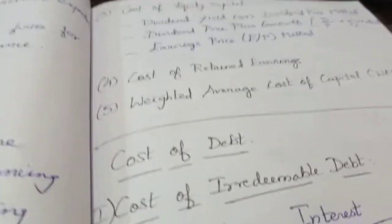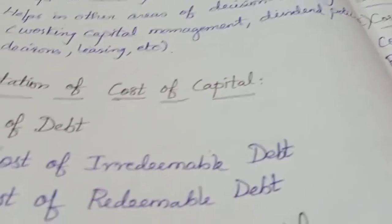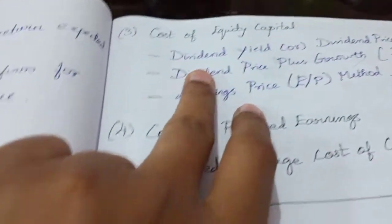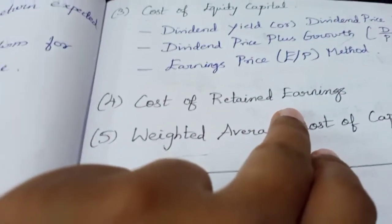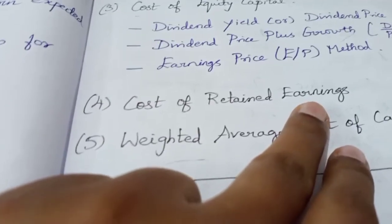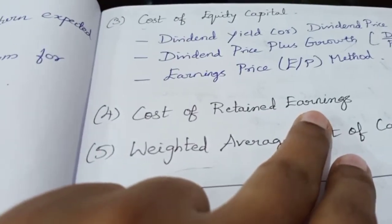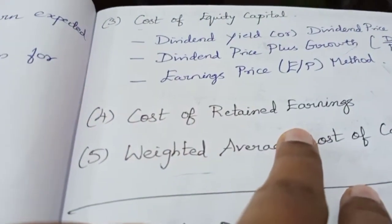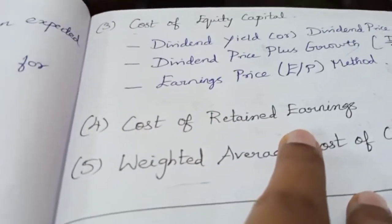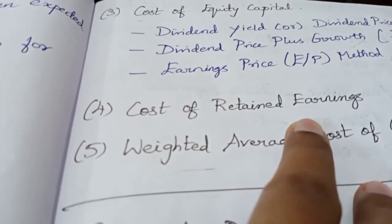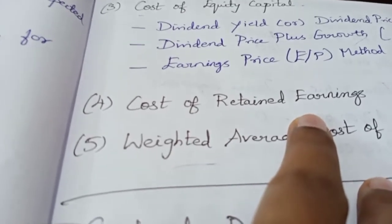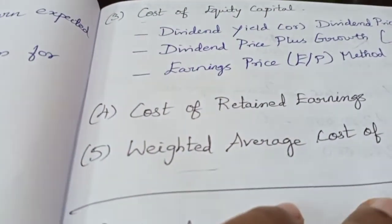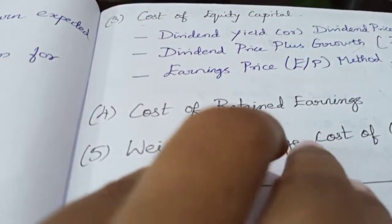The mix of the capital structure is proportional to the cost of debt, cost of preference share capital, cost of equity capital, and cost of retained earnings. In business, how do we distribute profits? How do we pay dividends to shareholders and what portion goes where?